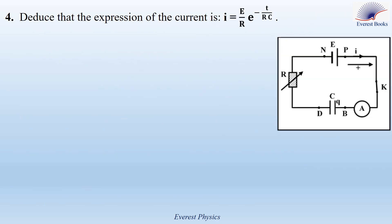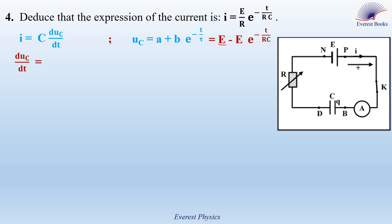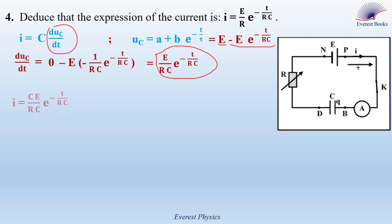Part 4: determine the expression of the current. Since I equals C times dUC/dt, and UC equals E minus E times e to the power minus t over RC, differentiating gives dUC/dt equals E over RC times e to the power minus t over RC. Replacing dUC/dt, I becomes C times E over RC times e to the power minus t over RC. C cancels, so I equals E over R times e to the power minus t over RC.